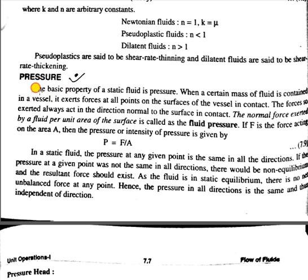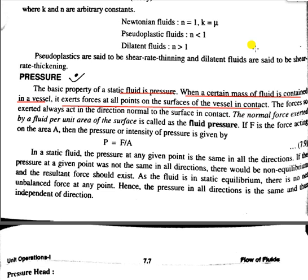The basic property of a static fluid is pressure. Any static fluid has the main property of fluid pressure. When a certain mass of fluid is contained in a vessel, it exerts force on the surface of the vessel in contact. Generally, the normal force exerted by a fluid per unit area of the surface is called fluid pressure.